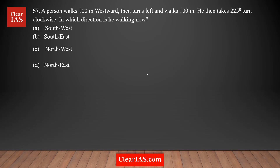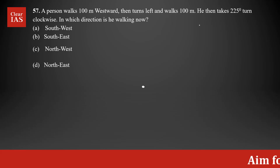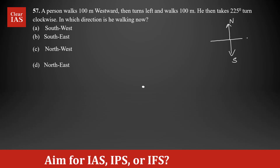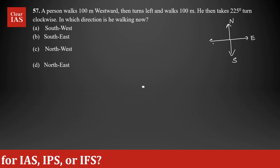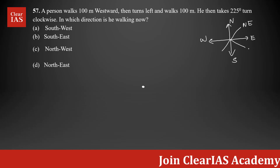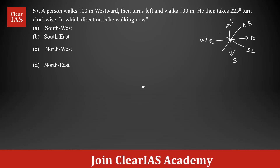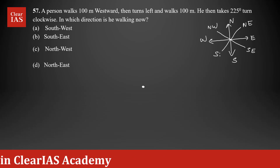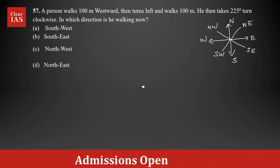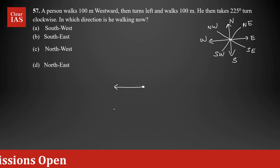Let's analyze the question. A person walks 100 meters westward. Let's say this is the starting point. I'm drawing out the base directions here — this is north, south, east, and west. Also, this is northeast, southeast, northwest, and southwest. So in the direction west, the person walks 100 meters.